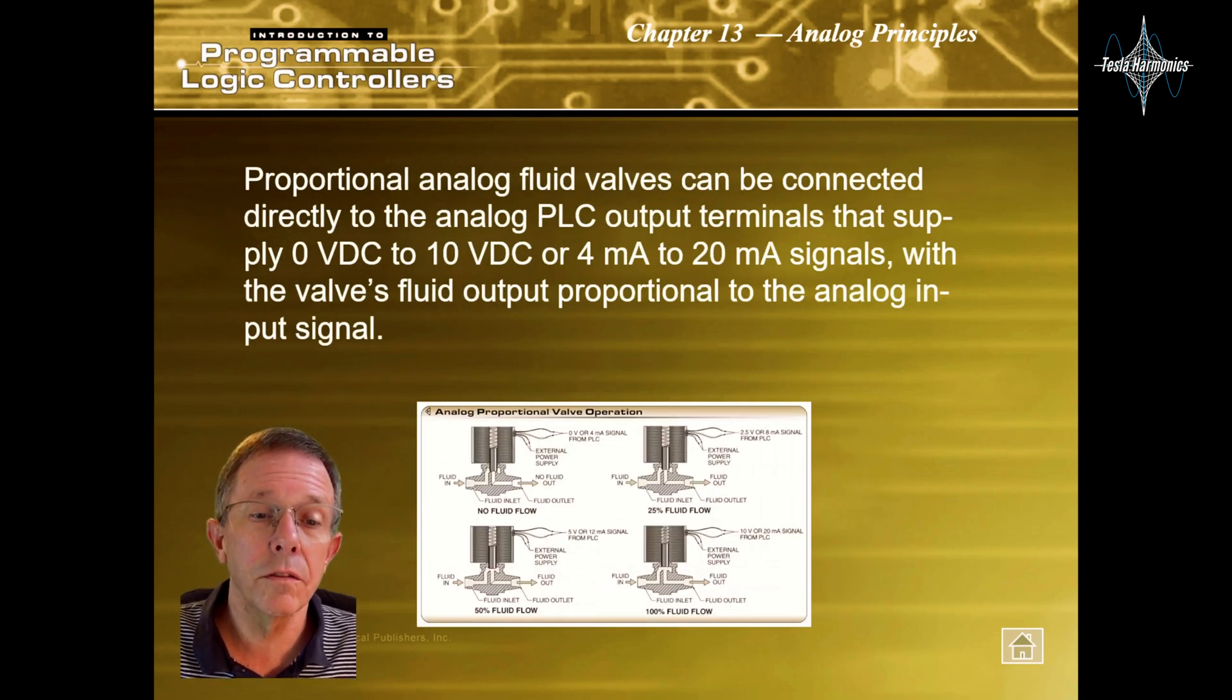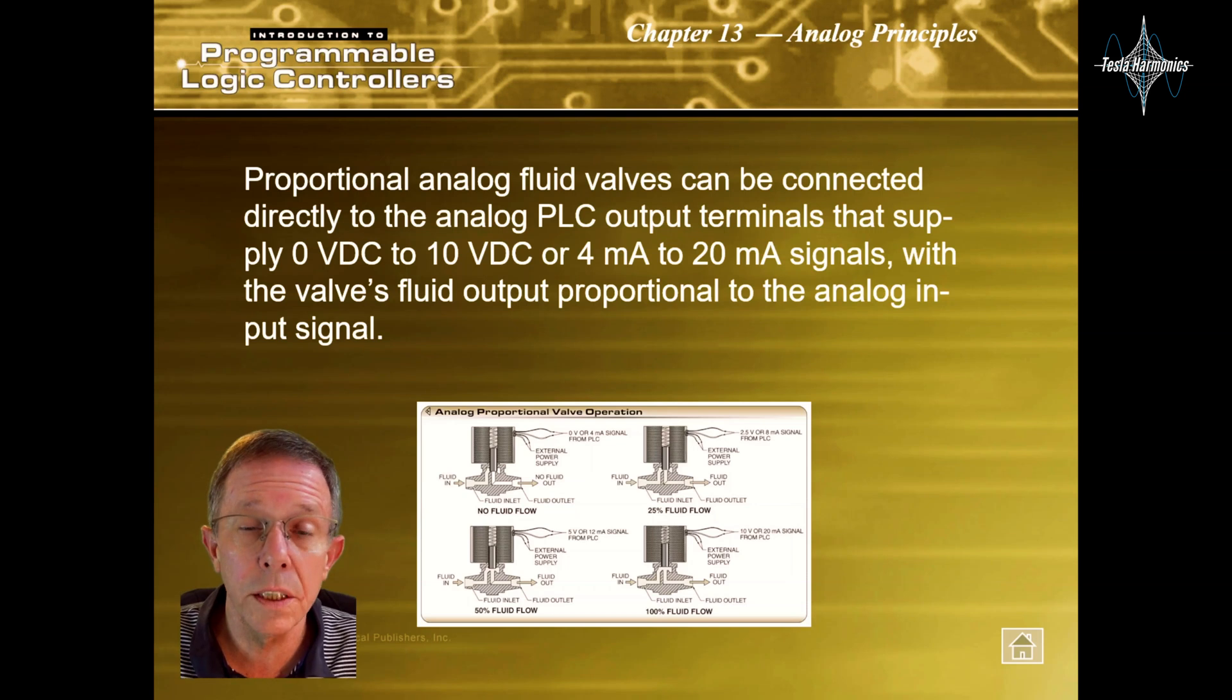Proportional analog fluid valves can be connected directly to an analog PLC output terminal that supply 0V to 10V DC or 4mA to 20mA signals, with the fluid valve output proportional to the analog's input signal.